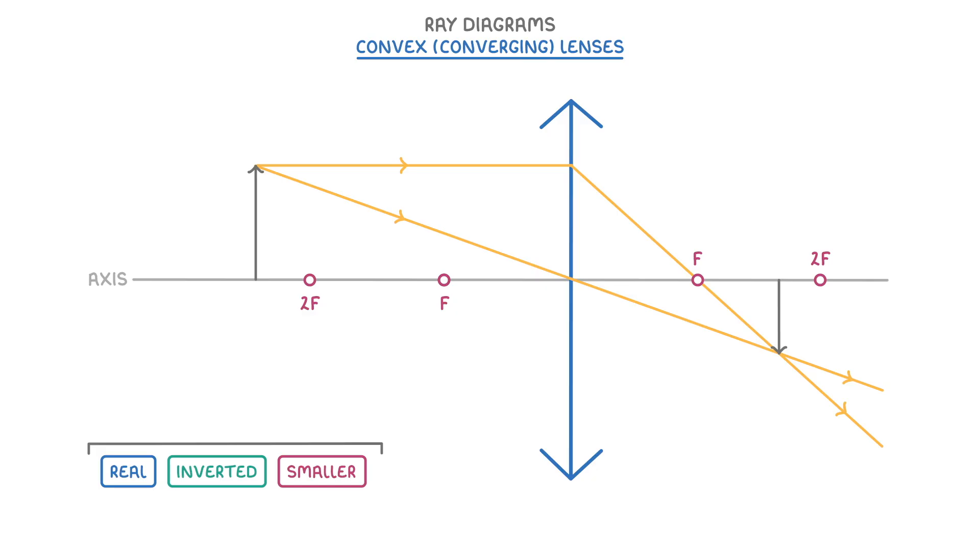Now, ray diagrams for convex lenses won't always look like this. It's only because our object here is more than two times the focal distance away from the lens. If our object was at two times the focal distance exactly, then the image would still be real and inverted, but it would be exactly the same size.